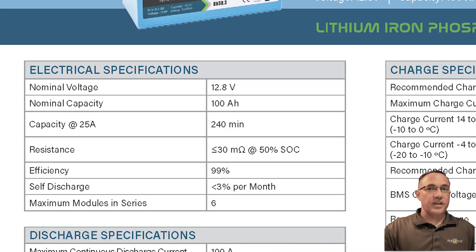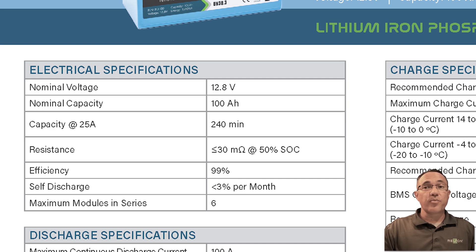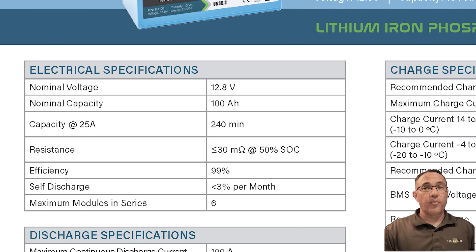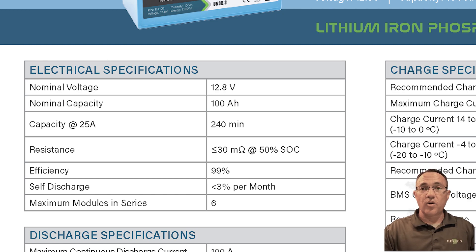Starting with electrical specifications, we'll take a look at nominal voltage. LiFePO4 batteries have an operating range between 2.5 and 3.65 volts per cell. However, 3.2 volts per cell is the nominal voltage for LiFePO4 batteries because it's the midpoint, or average operating voltage. The RB100 is composed of four banks of 3.2 volt cells connected in series, making the total nominal voltage 12.8 volts.